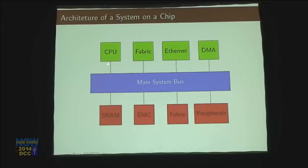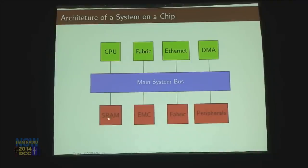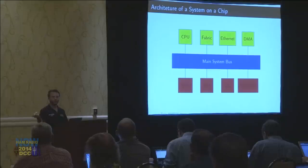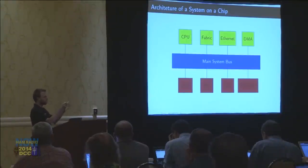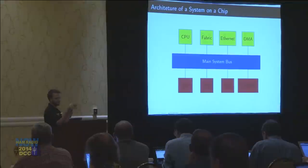In this case I'm talking about there's a processor master. The FPGA fabric could have a master. The Ethernet could be a master. Something called a direct memory access controller, which we'll talk a lot about in the final section, is a master. And then there can be all these slaves like the RAM, internal RAM, external RAM. The fabric could also behave as a slave, and then all sorts of peripherals — all your I2Cs, your UARTs — all of those things flower off of this main system bus.